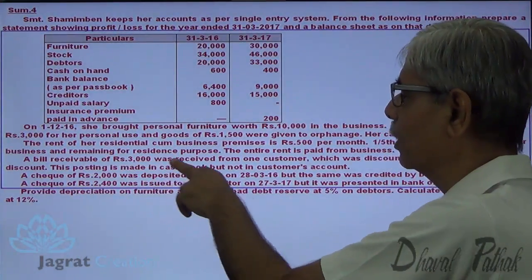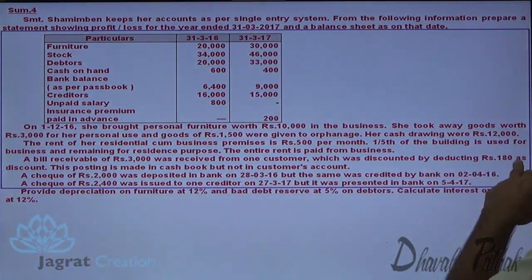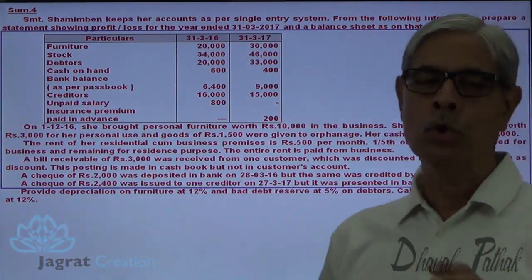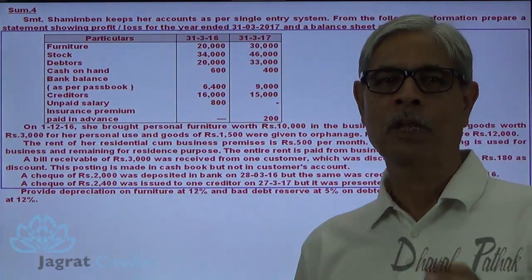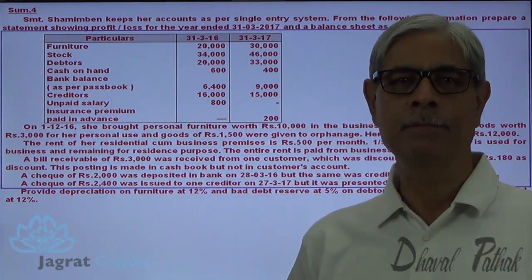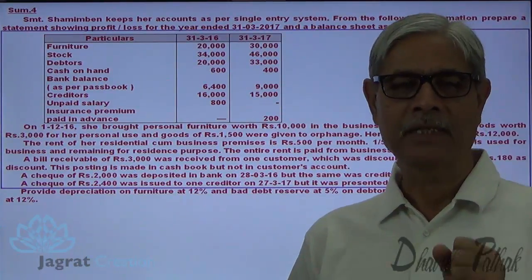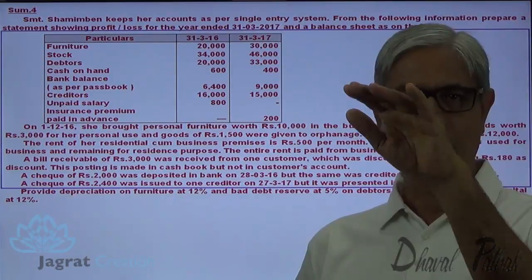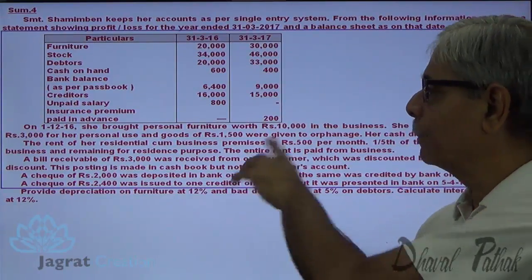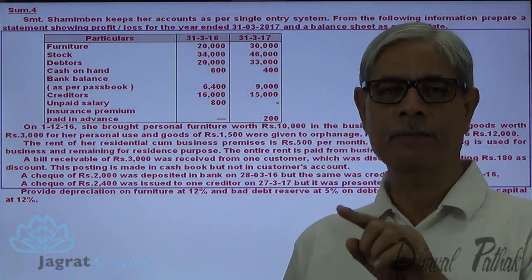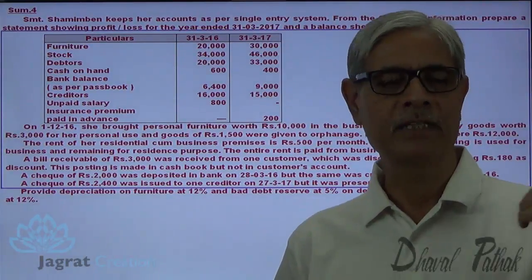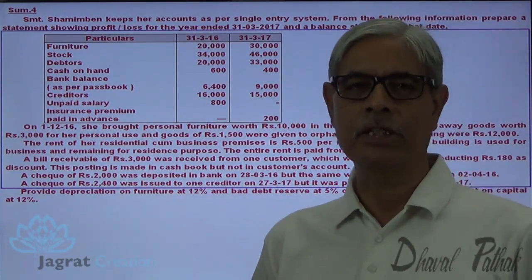A bill receivable of 3,000 was received from a customer, which was discounted — discount of 180. The posting is made in the cash book but not in the customer's account. When the bills receivable is received, bills receivable account is debited and the customer account is credited, so the debtor's balance decreases. Since this was not recorded, while preparing the statement of affairs, you are required to reduce the debtor's balance to the extent of the bill of exchange received. This bill is already discounted and cashed, so we have to reduce the debtor's balance.